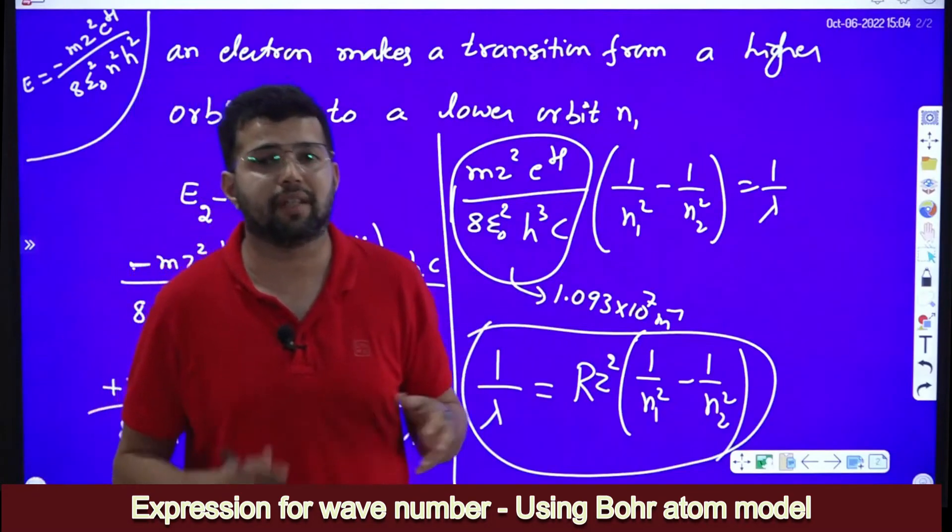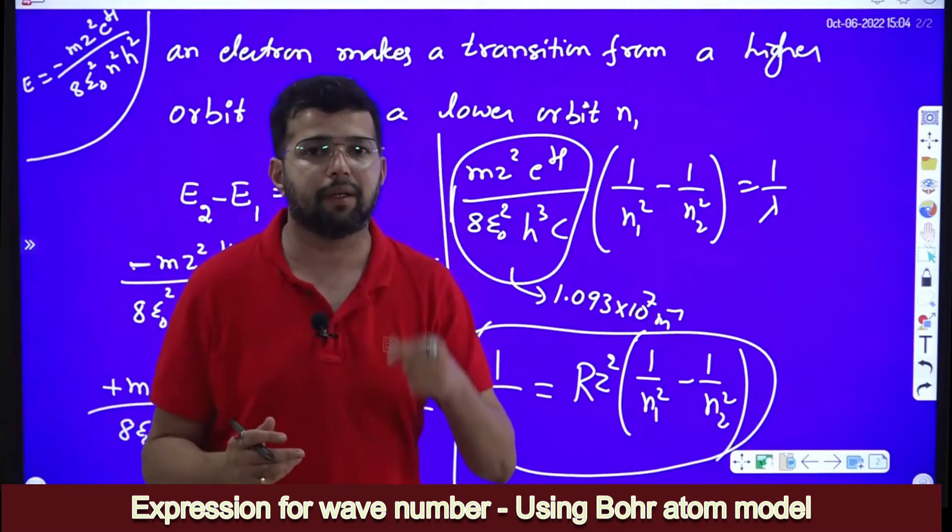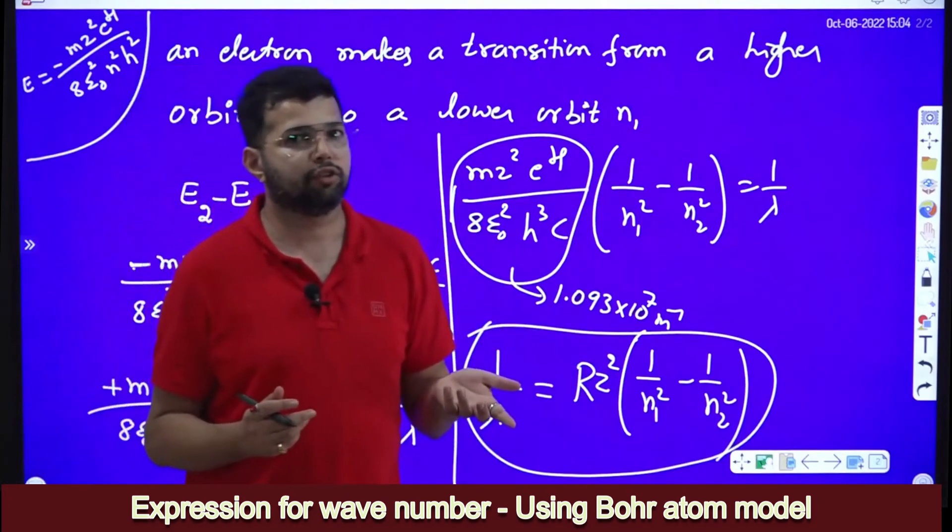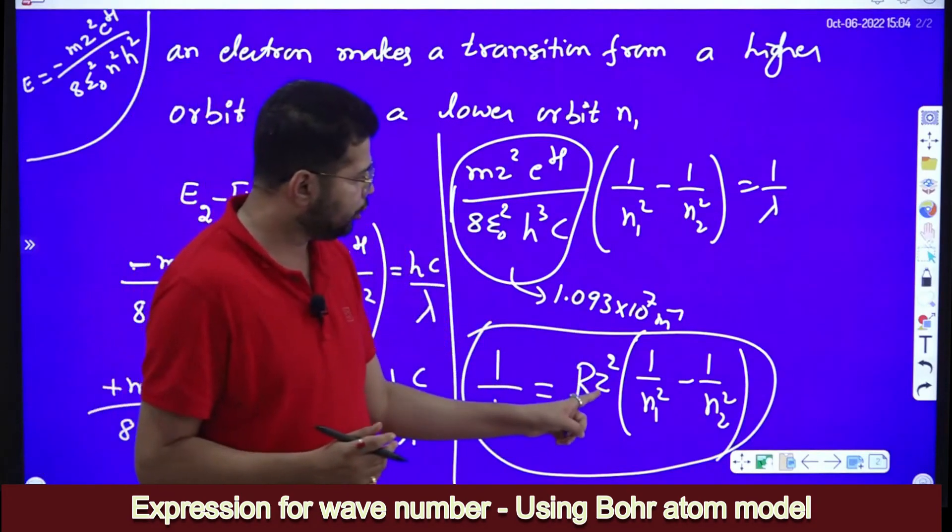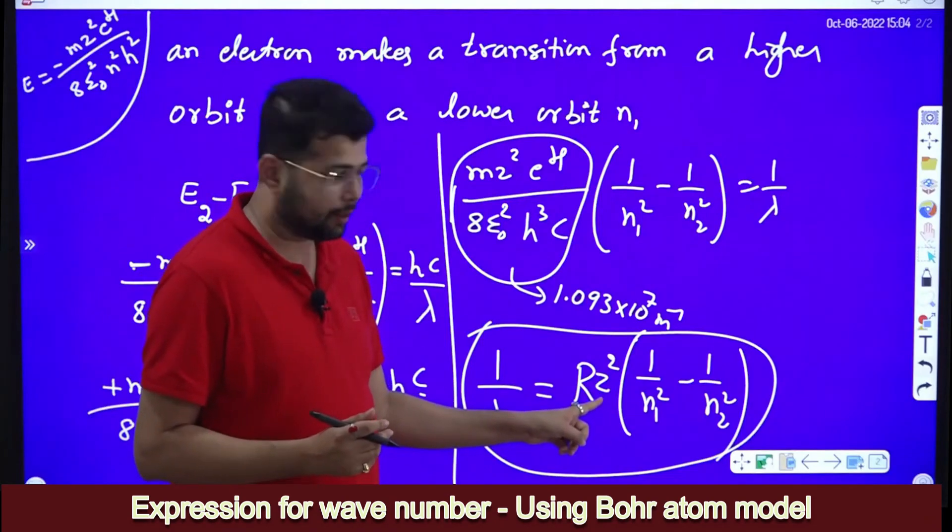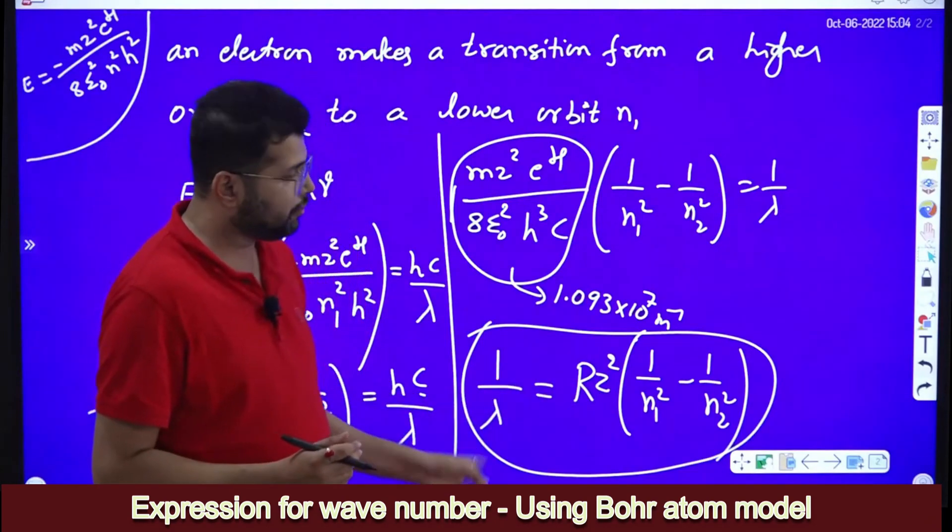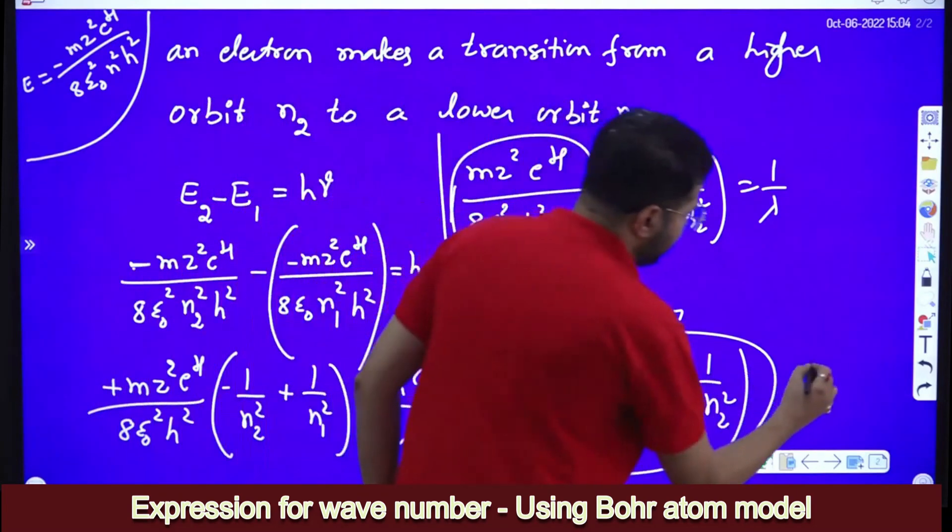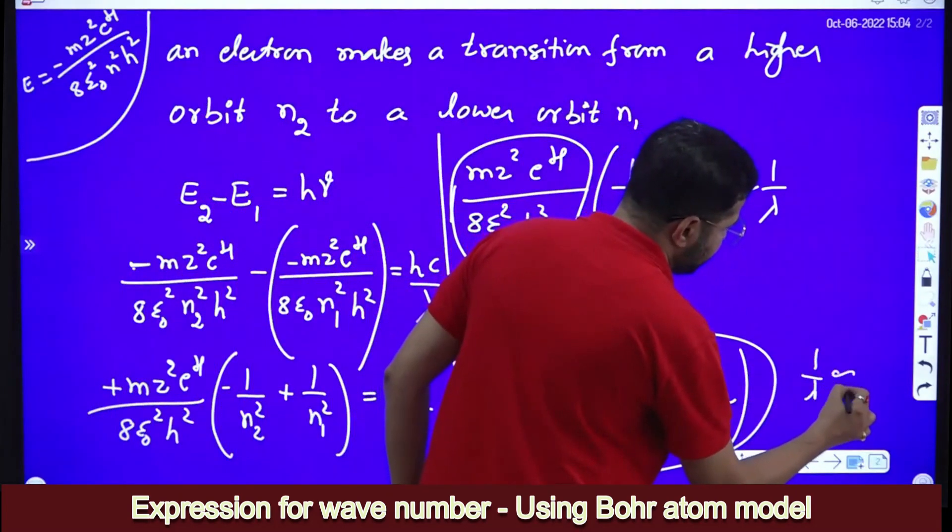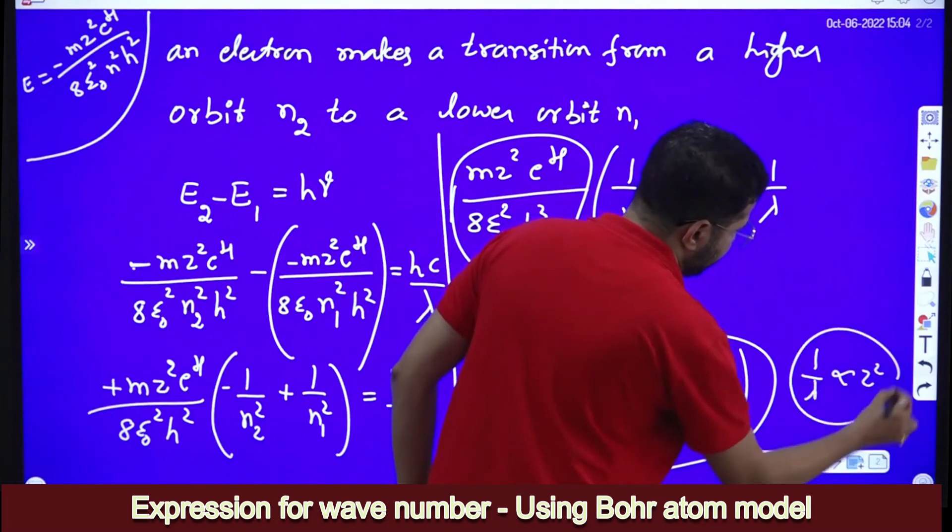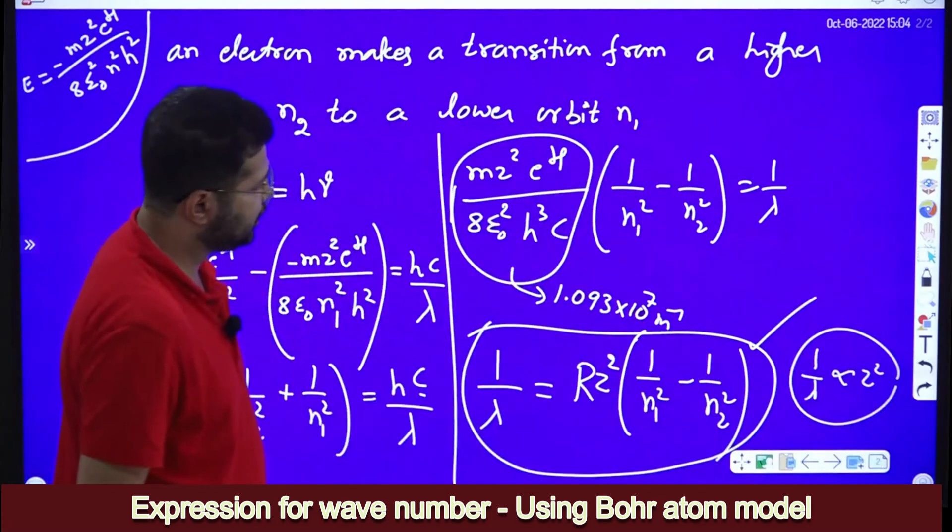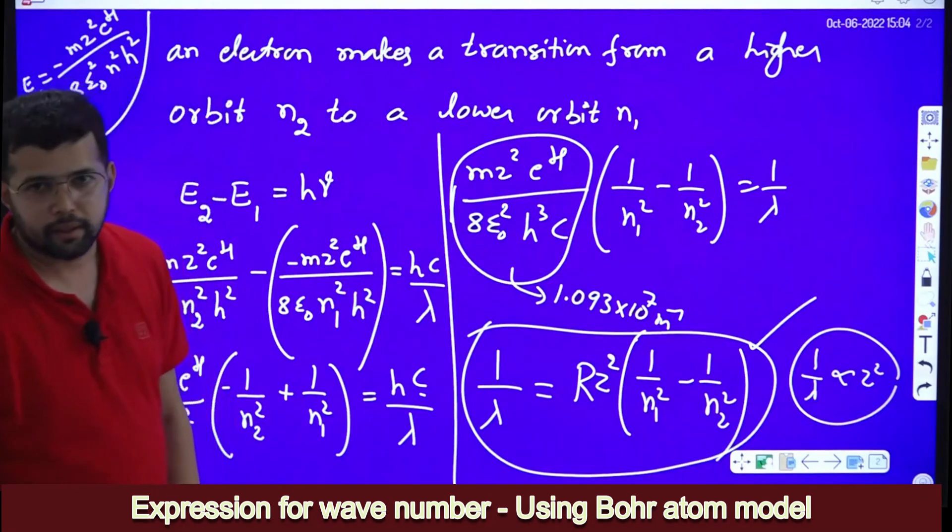But in general, for hydrogen like atom, for example, for a singly ionized helium, Z equal to 2. Then you cannot neglect this Z. Wavelength is inversely proportional to square of the atomic number, 1 by lambda is proportional to Z square, which is helpful for NEET. But for board examination purpose, this is enough. Thank you very much.